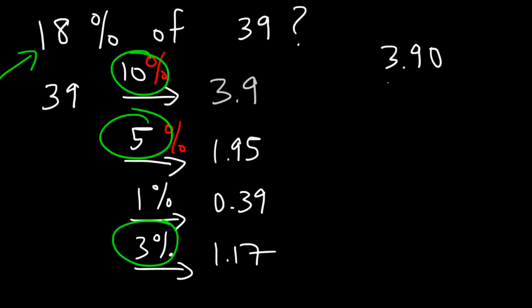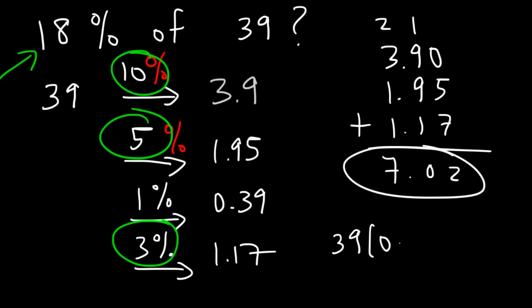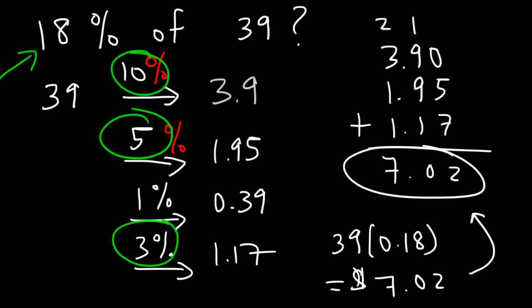Adding 3.9, 1.95, and 1.17: 5 plus 7 is 12, carry the 1; 9 plus 9 plus 1 is 19, carry the 1 — wait, 1 plus 9 is 10, plus 1 is 10, so write 0 carry 2; 2 plus 3 is 5 plus 1 plus 1 is 7 — so it's $7.02. Confirming with the calculator: 39 times 0.18 is indeed $7.02. Now you know how to perform percentages mentally.